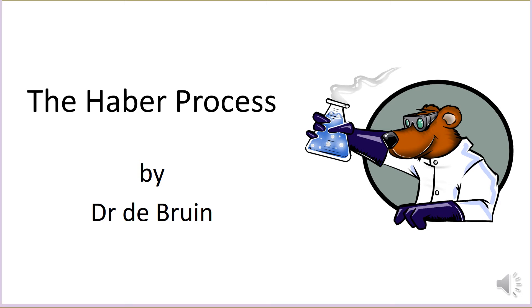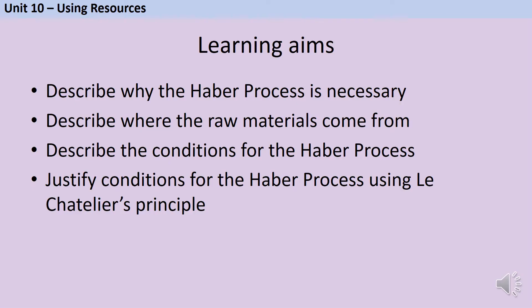This is a video about the GCSE chemistry topic of the Haber process. It links backwards to equilibrium, which you studied as part of the rates of reaction topic, and forwards to NPK fertilisers which is coming up next. In this video we're going to talk about why the Haber process is necessary, where the raw materials come from, what the reaction conditions are, and justify those conditions using Le Chatelier's principle.